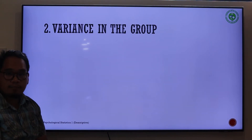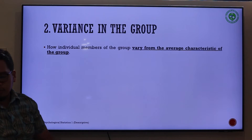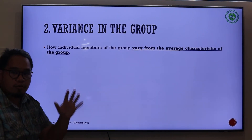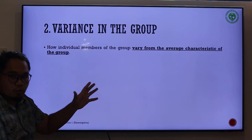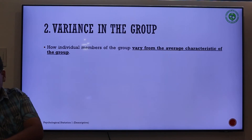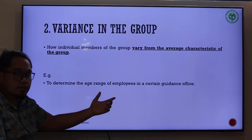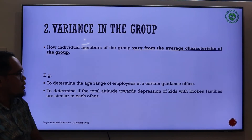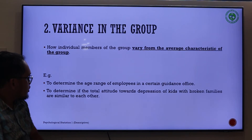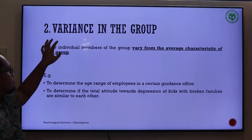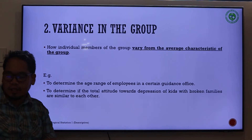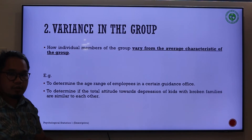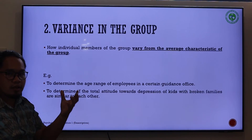The second analytic goal is variance in the group, or variability, and it is most of the time paired with central tendency. This talks about how individual members of the group vary from the average characteristic. Examples include determining the age range of employees in a guidance office, and determining if the total attitude towards depression of kids with broken families are similar to each other. Central tendency and variance in the group are both under descriptive analysis.